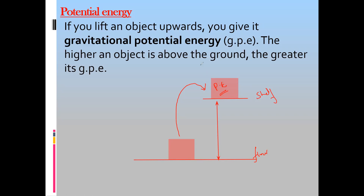Greater height means greater potential energy. If student A lifts a block to a lower shelf and student B lifts the same block to a higher shelf, the block in case B has greater potential energy because it is raised to a greater height.